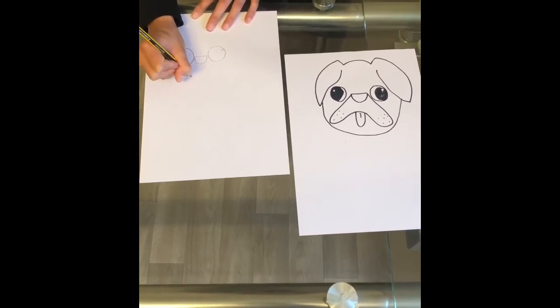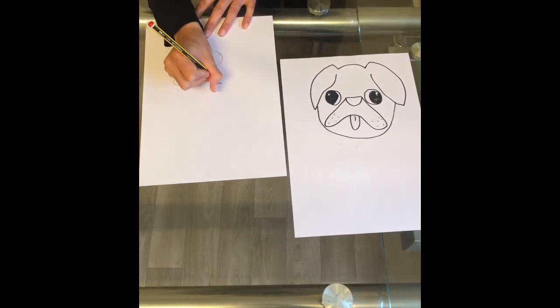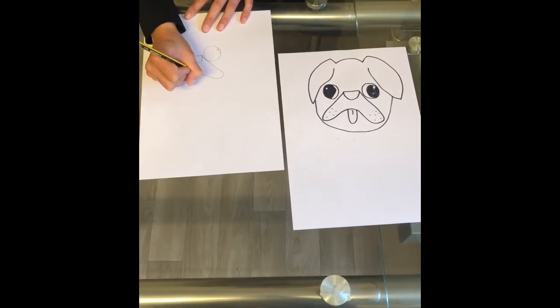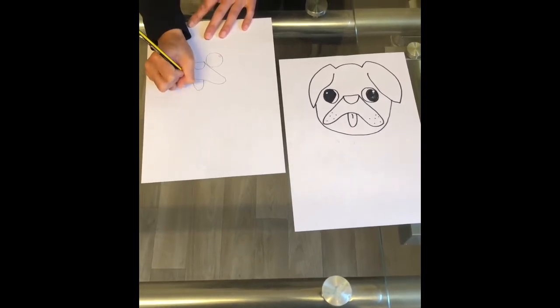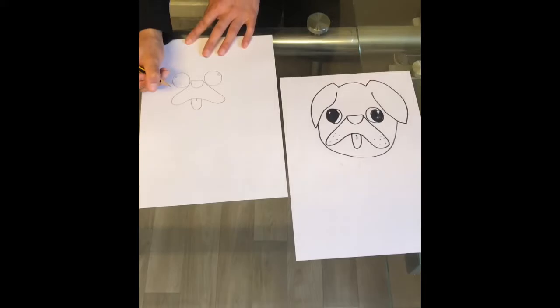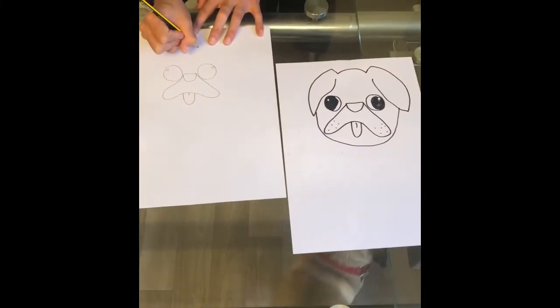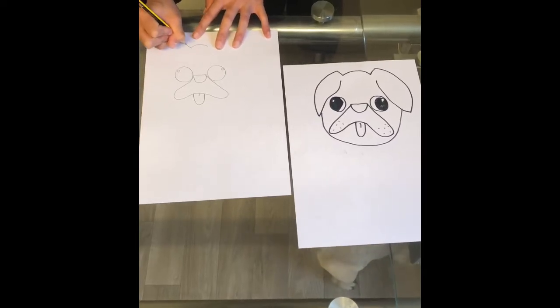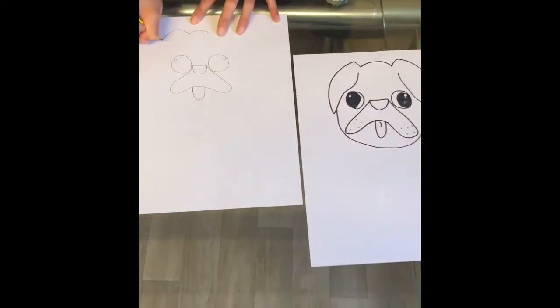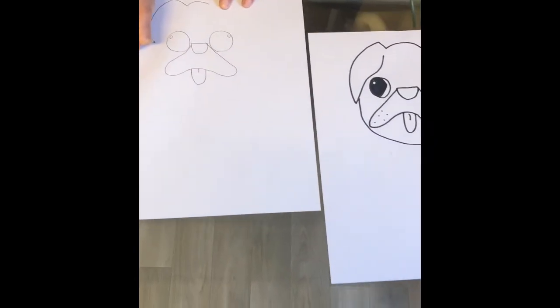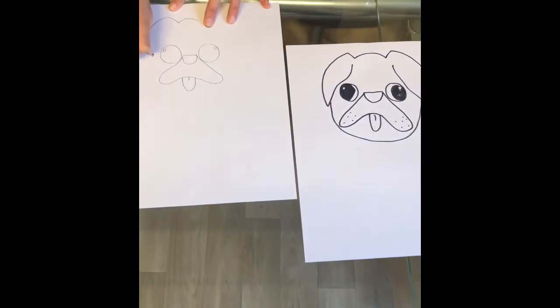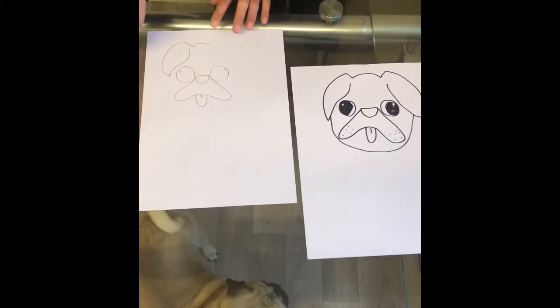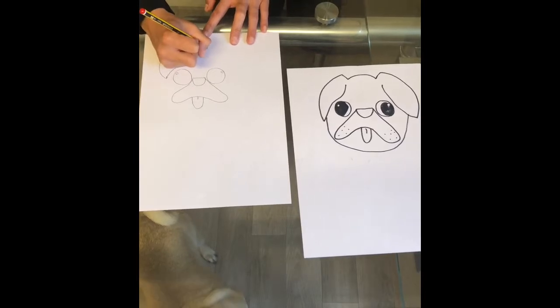The pugs have the fatty bits and the jowls. I'm going to draw lines and then the outline of the face.